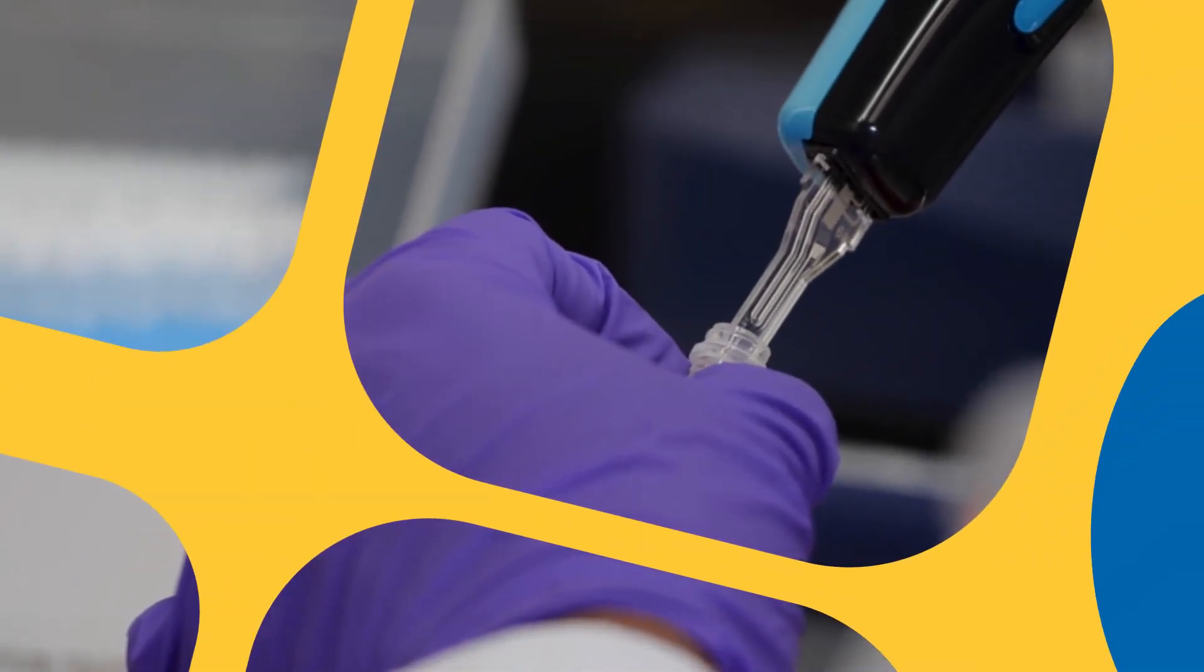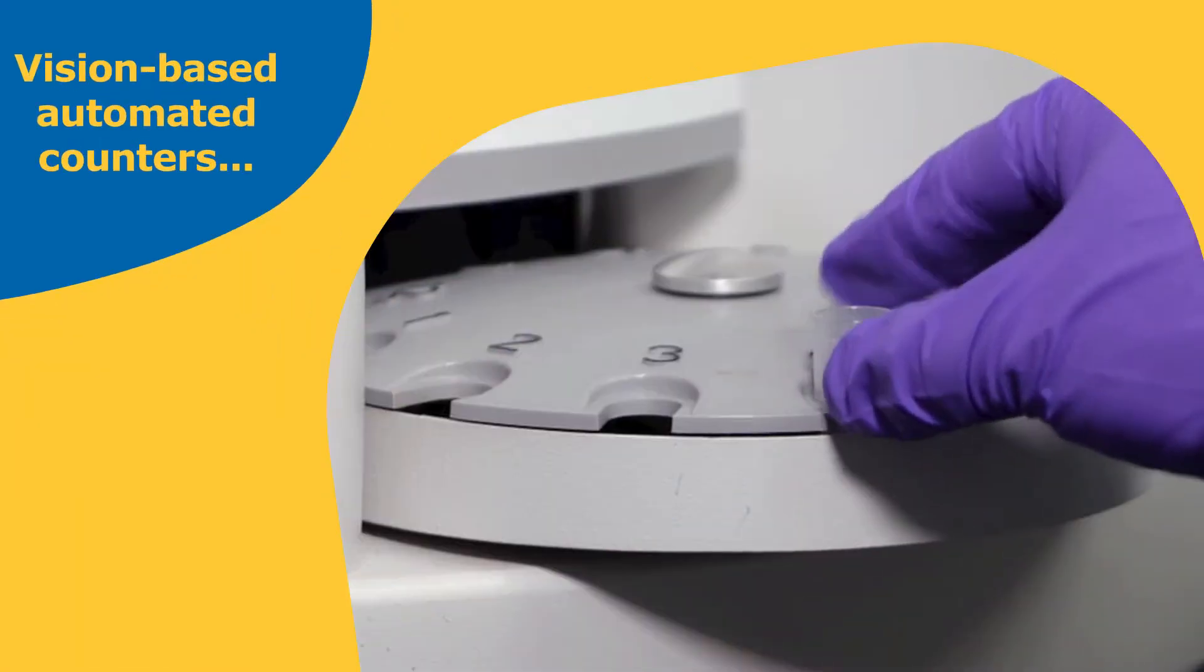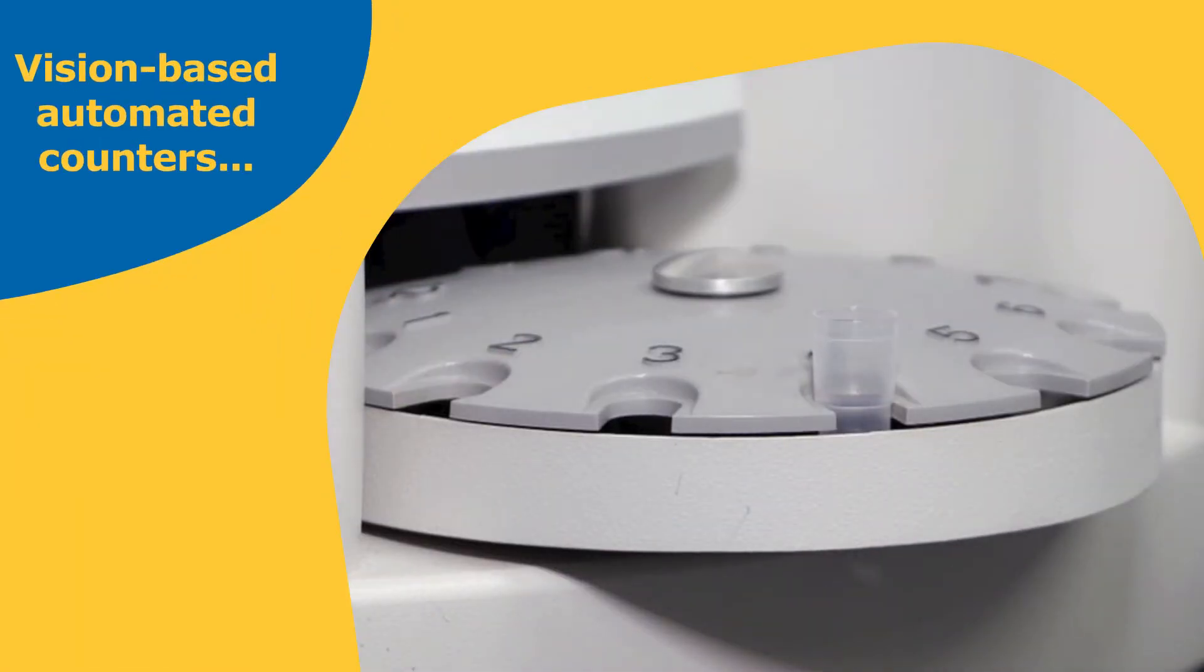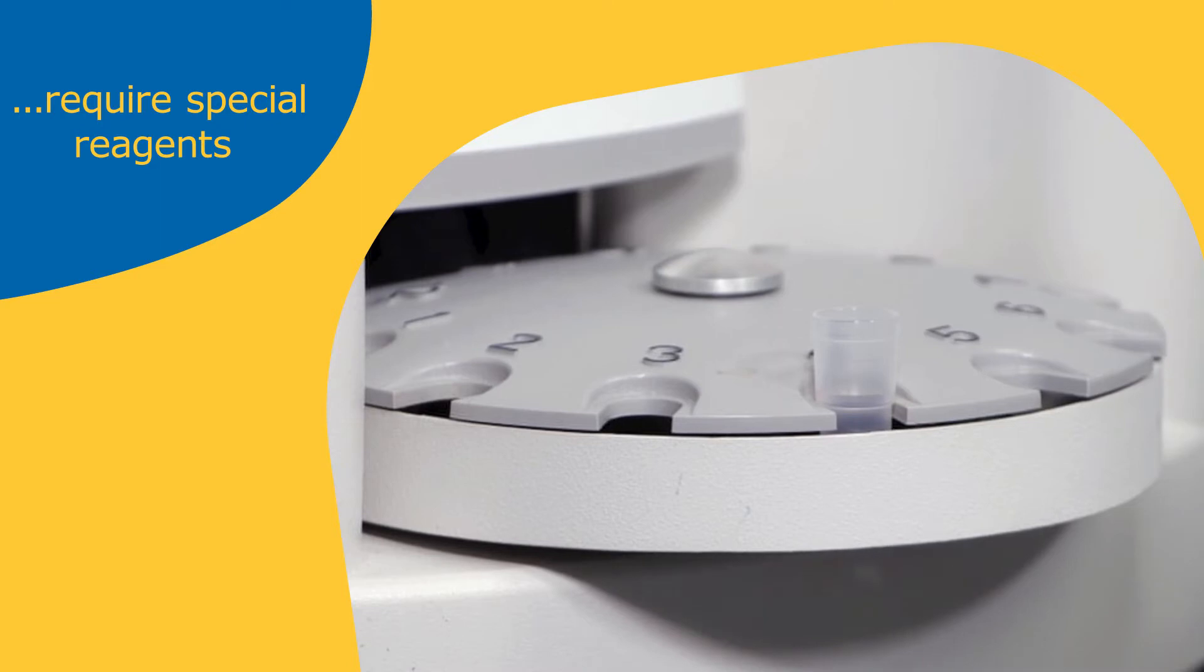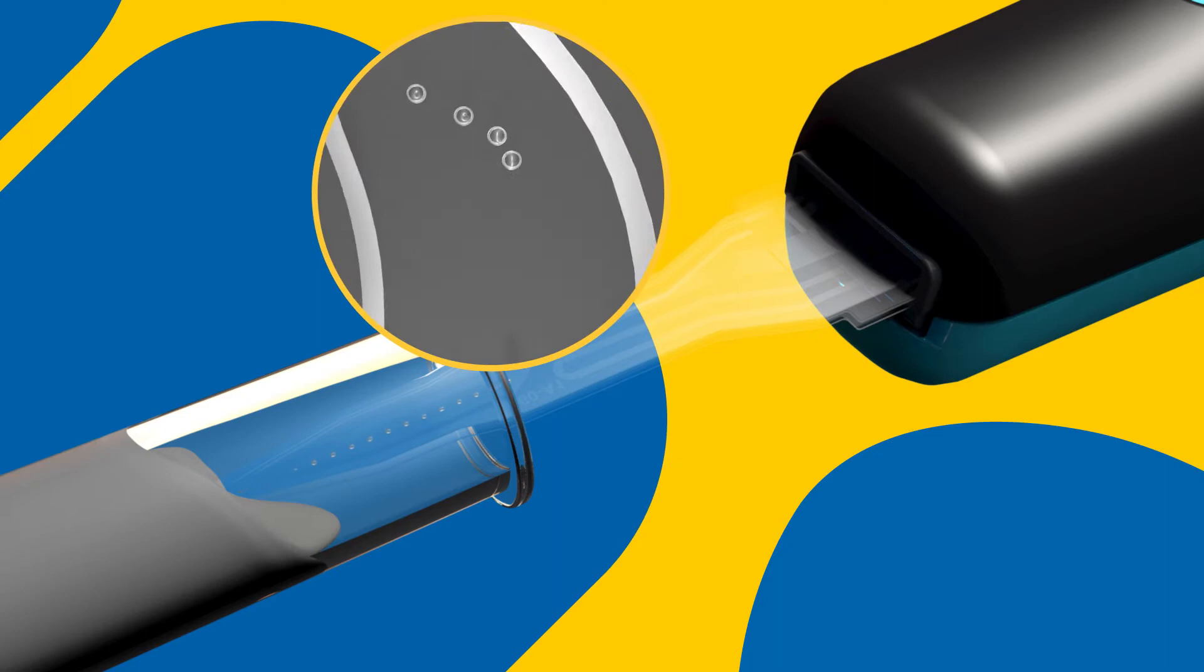Obtaining counts is as easy as pipetting—simply insert the sensor into the sample and draw the sample into the instrument. Unlike vision-based automated counters, no special and potentially toxic reagents are required. Cells are counted as they pass in a single stream through microfluidic channels in the sensor.